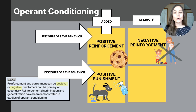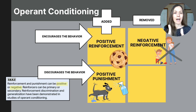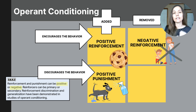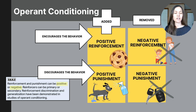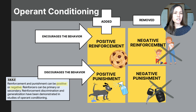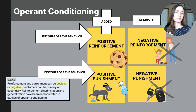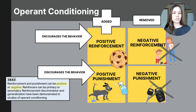Negative reinforcements encourage you to do the behavior again because something was taken from you. For example, if a mother tells her son he won't have to sweep the floors if he completes his homework every night before dinner, removing this chore encourages him to do his homework. The goal of positive and negative reinforcements is that the subject continues a behavior. The goal of a punishment is to stop a behavior. Positive punishments discourage a behavior when something is added — like squirting a dog with water to stop it from urinating in the house. A negative punishment discourages a behavior by removing a desired stimulus, like taking away a teenager's car keys for coming home late past curfew.